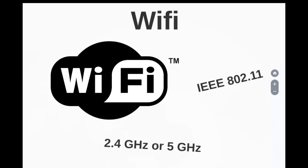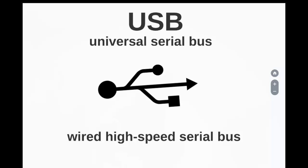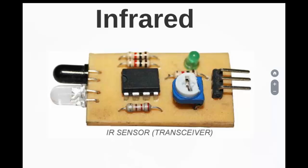USB, or Universal Serial Bus, is a wired high-speed serial bus for data communication. The first version, USB 1.0, was released in 1995 and created by the USB core group including Intel, Microsoft, IBM, Compaq, Digital, and Northern Telecom. The USB communication system follows a star topology with a USB host at the center and peripheral devices connected to it. A USB host can support connections of up to 127 devices including peripheral devices and other USB hubs.